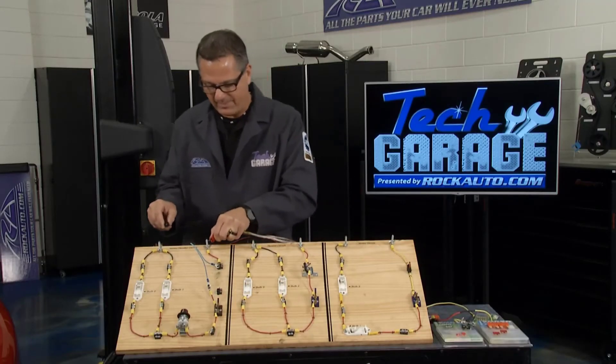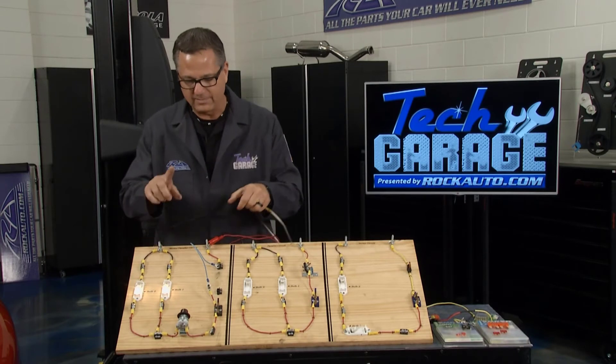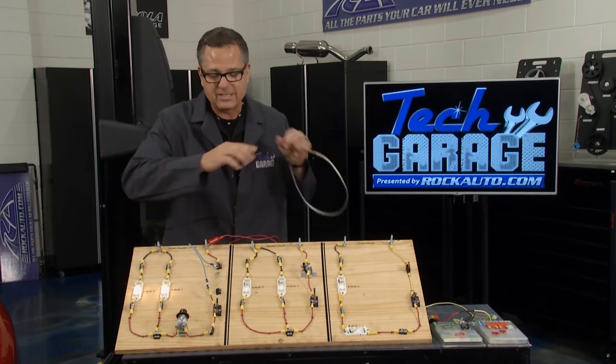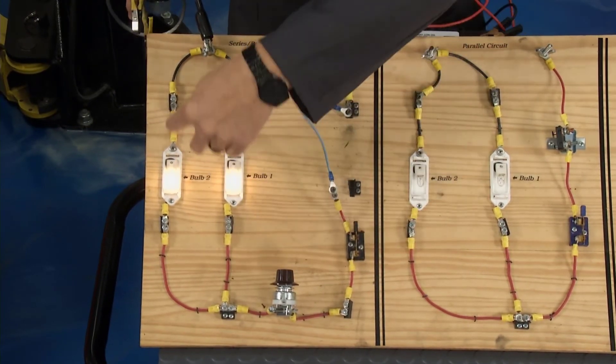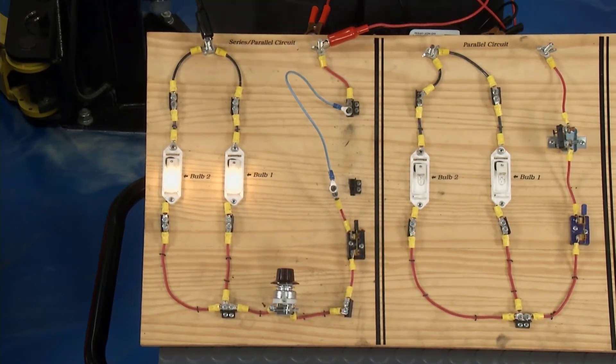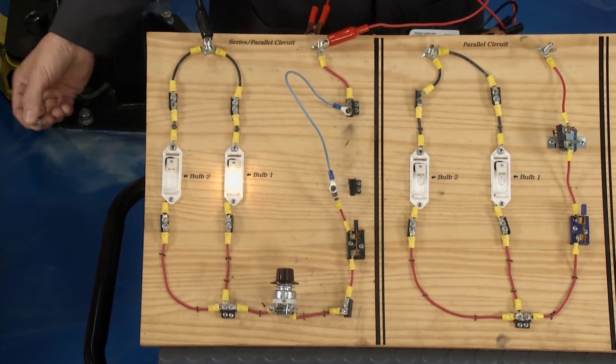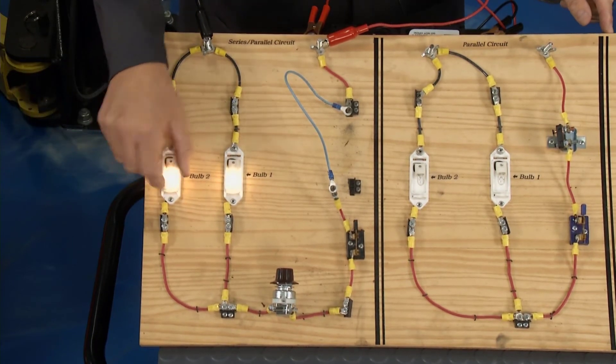Last circuit is actually a parallel circuit, series parallel. Pretty cool because we have a switch in series here, which I can dial up and down and change the brightness of the lights. And then we have the parallel portion right there. Same as the parallel. I pull one light bulb out, the other one stays lit. The only thing different, we have a switch in series.